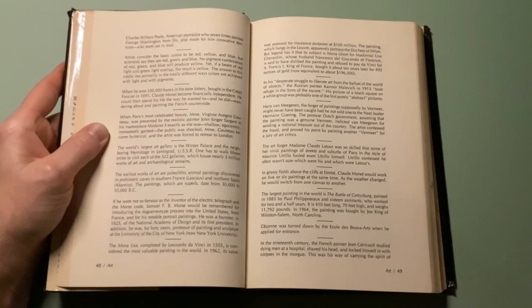In grassy fields above the cliffs of Etretat, Claude Monet would work on five or six paintings at the same time. As the weather changed he would switch from one canvas to another.